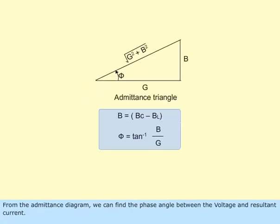From the admittance diagram, we can find the phase angle between the voltage and the resultant current.